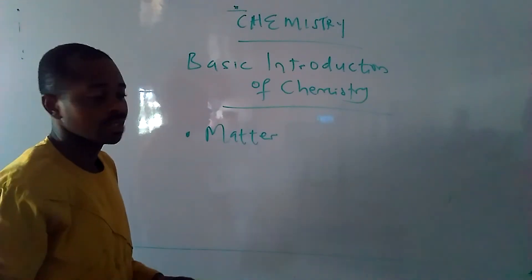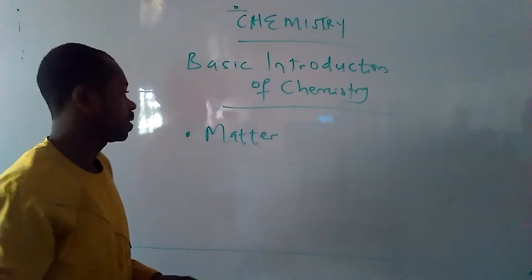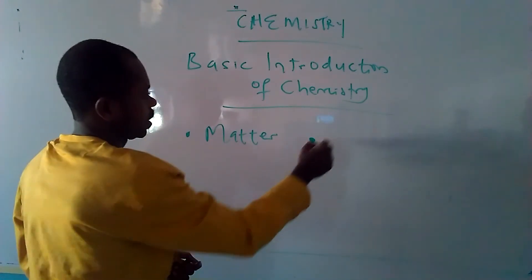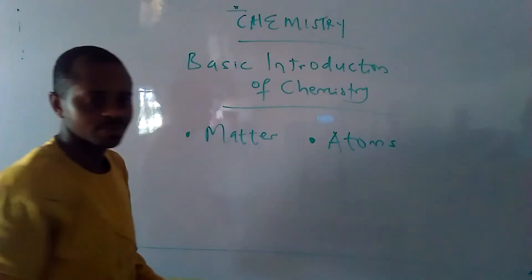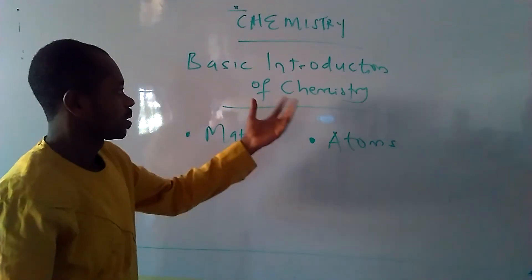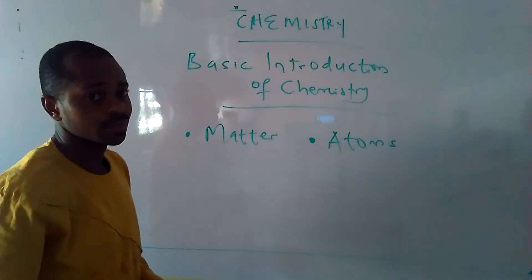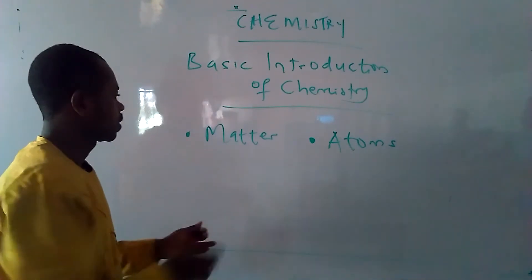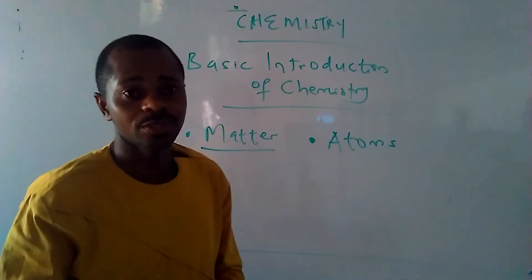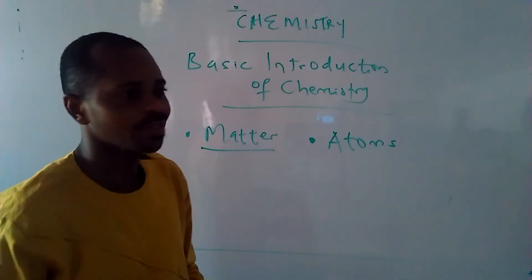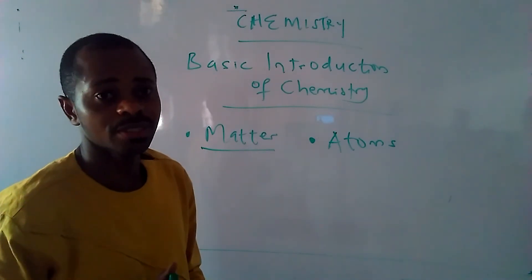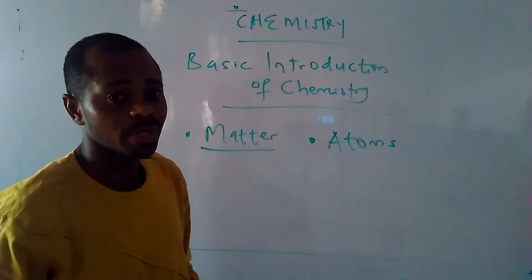Matter is very, very key if you want to understand chemistry. So we're talking about matter and then we're also talking about a keyword known as atoms. So these are the two basic things that are going to allow us to understand what chemistry is all about. So let's begin our discussion of chemistry starting with matter. When we are in primary school and even to the point of junior secondary school, we usually hear of the word matter as anything that has weight or has mass and occupies space. Matter is anything that has mass and occupies space.